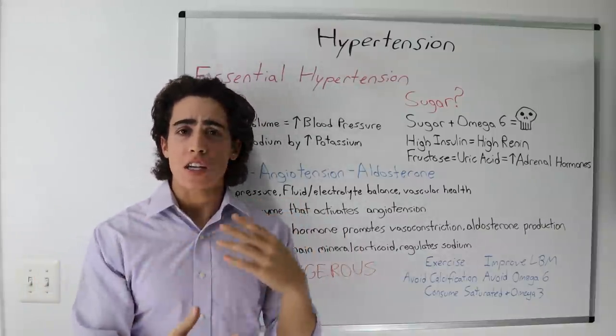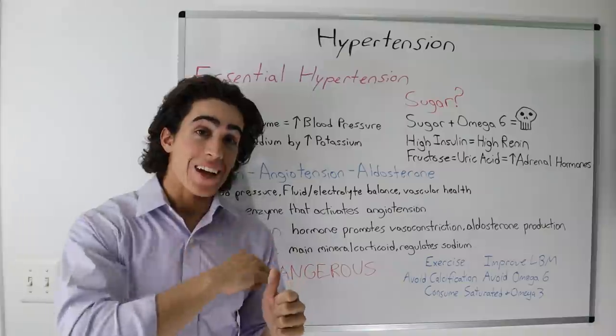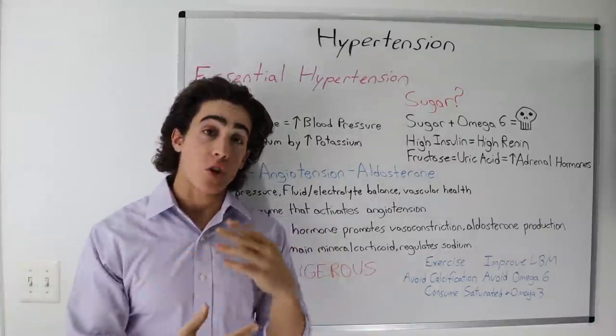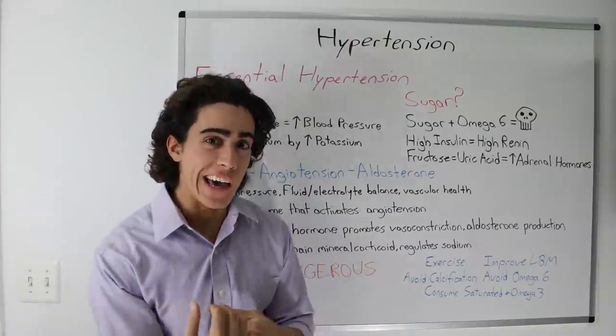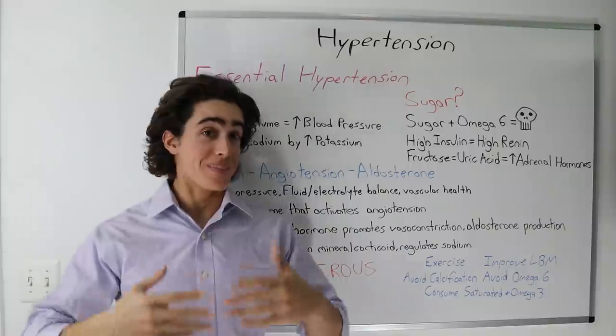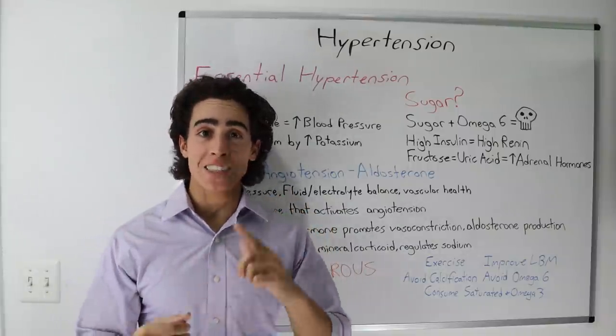The raw primal dieters, Aajonus Vonderplanitz, aka the rawtards, are usually not getting enough salt, whereas the carnivores are using too much salt. You have to find the happy medium. I'll link some videos on potassium at the end here.